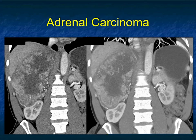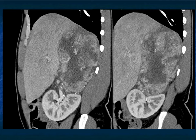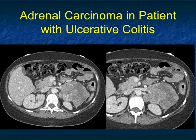Another example — large ACC pushing on the liver and kidney, necrotic, with areas of neovascularity and cystic spaces. The tumor is very necrotic. When staging these patients, look for renal vein involvement as well as IVC involvement. A lot of patients with adrenal cortical carcinoma are female and often in their 30s.